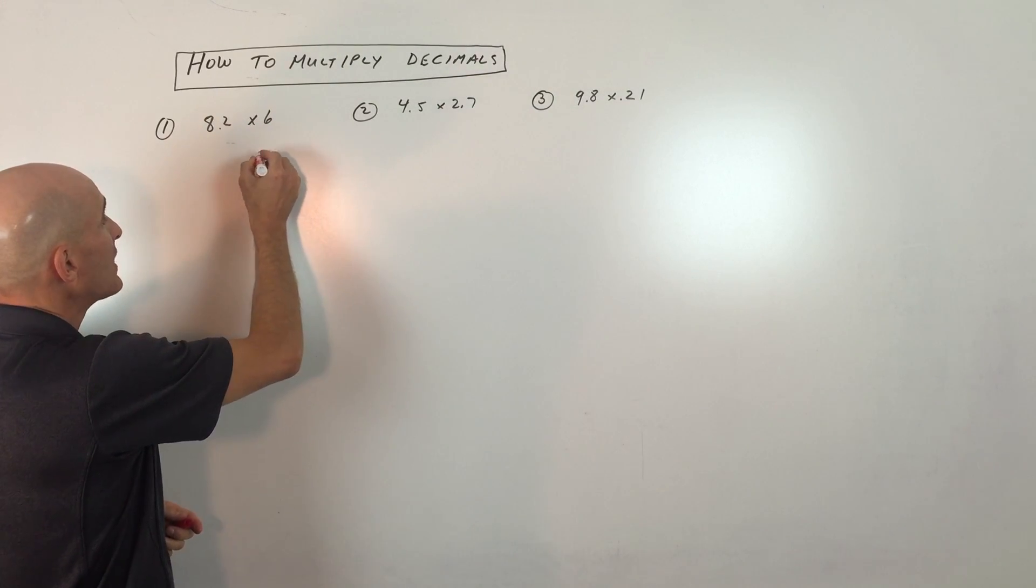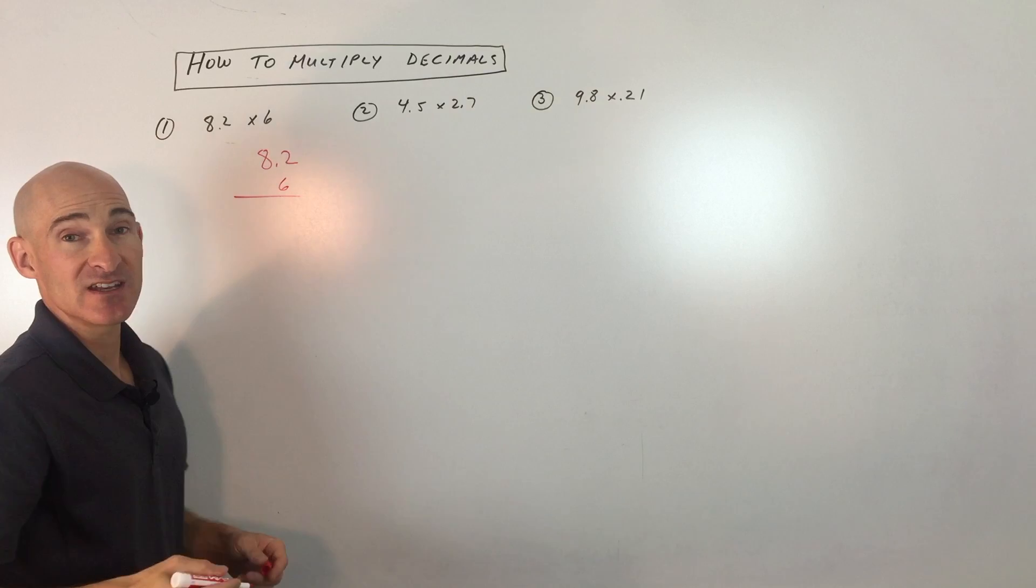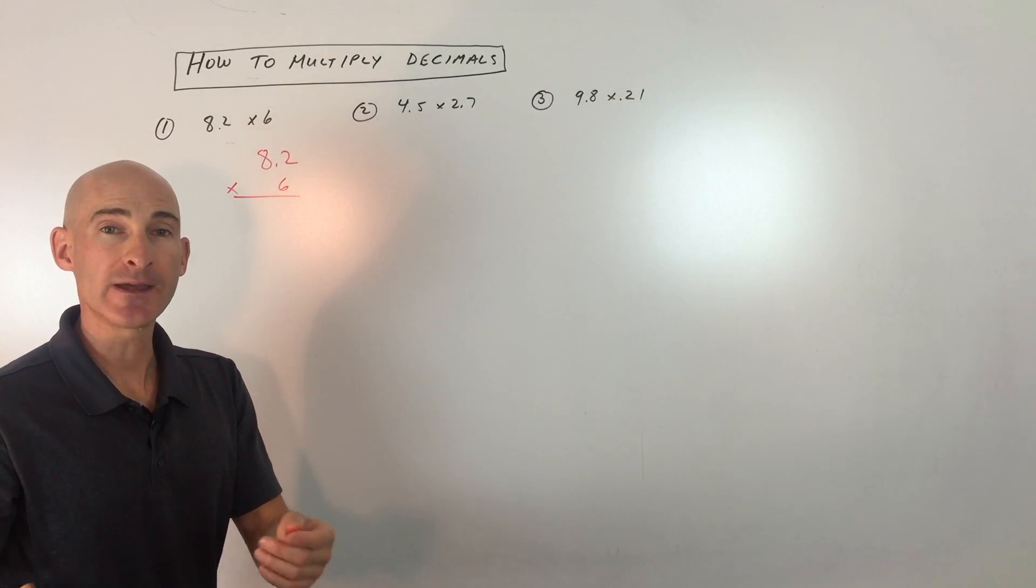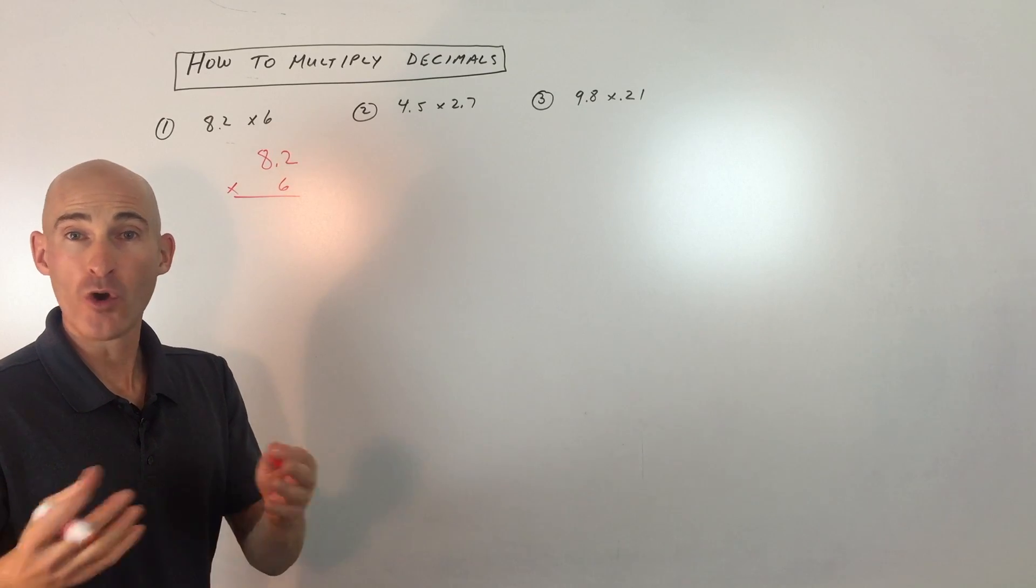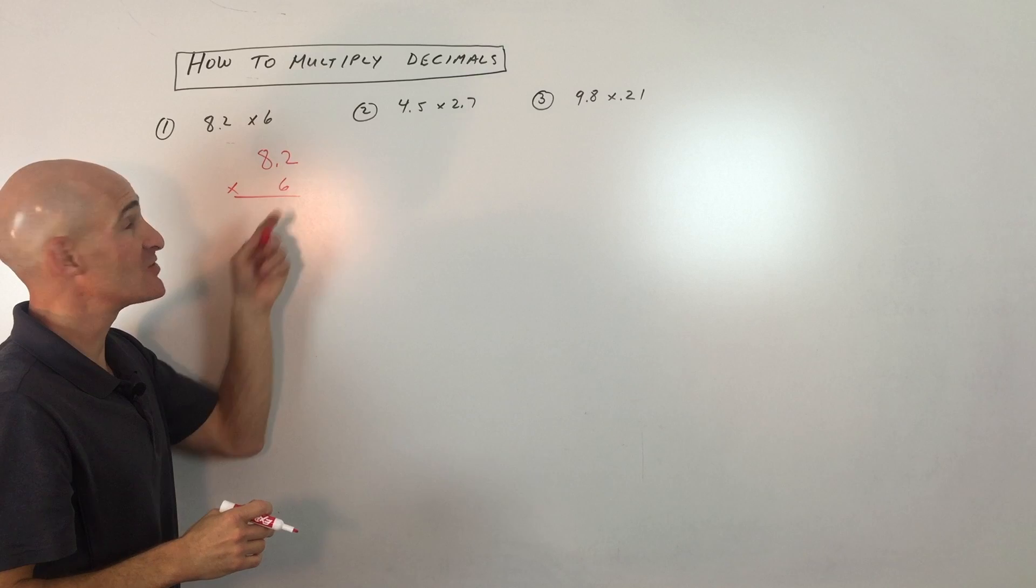If you already know how to do multiplication, it's going to be basically the exact same technique. So you have 8.2 times 6. Now what you're going to do is you're just going to pretend like all the numbers are just whole numbers, that this decimal is not even there.